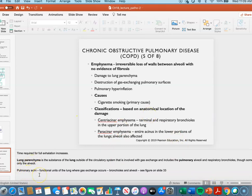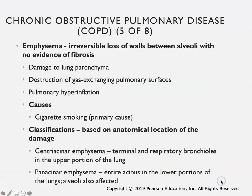You can classify emphysema based on where the damage is within the pulmonary acini - the functional units of the lung, essentially the bronchioles and alveoli. In centriacinar emphysema, the terminal and respiratory bronchioles are affected. In panacinar emphysema, the entire acinus and lower portion of the lungs are affected, meaning the alveoli are also going to be affected.